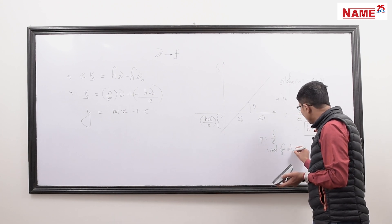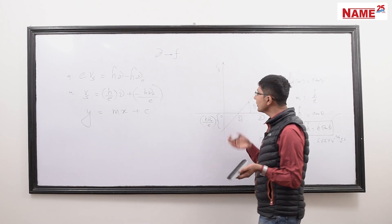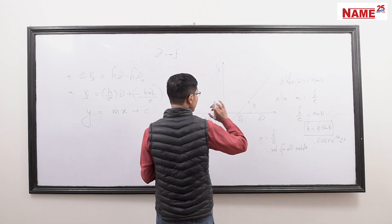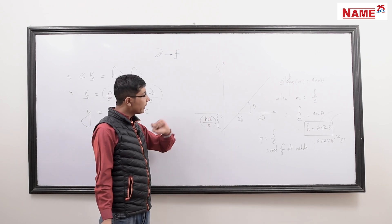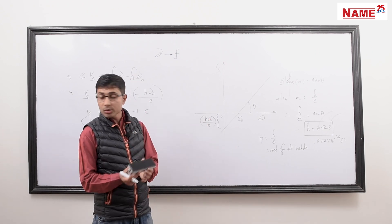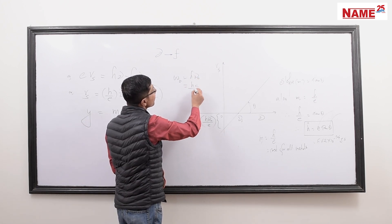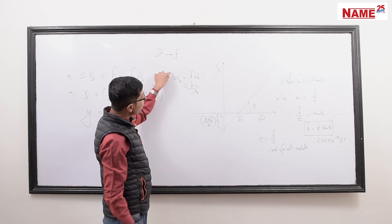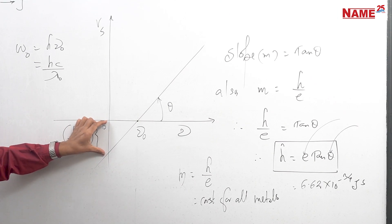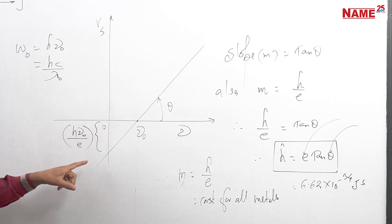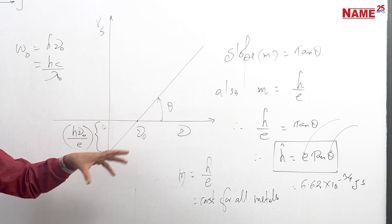The slope is constant for all metals — whether sodium, potassium, or copper — because h/e is universal. However, the y-intercept will change for different metals because the threshold frequency ν₀ and work function ω₀ = hν₀ differ for each metal. So the lines are parallel with equal slopes but different intercepts. This is the general information we have covered on the photoelectric effect.